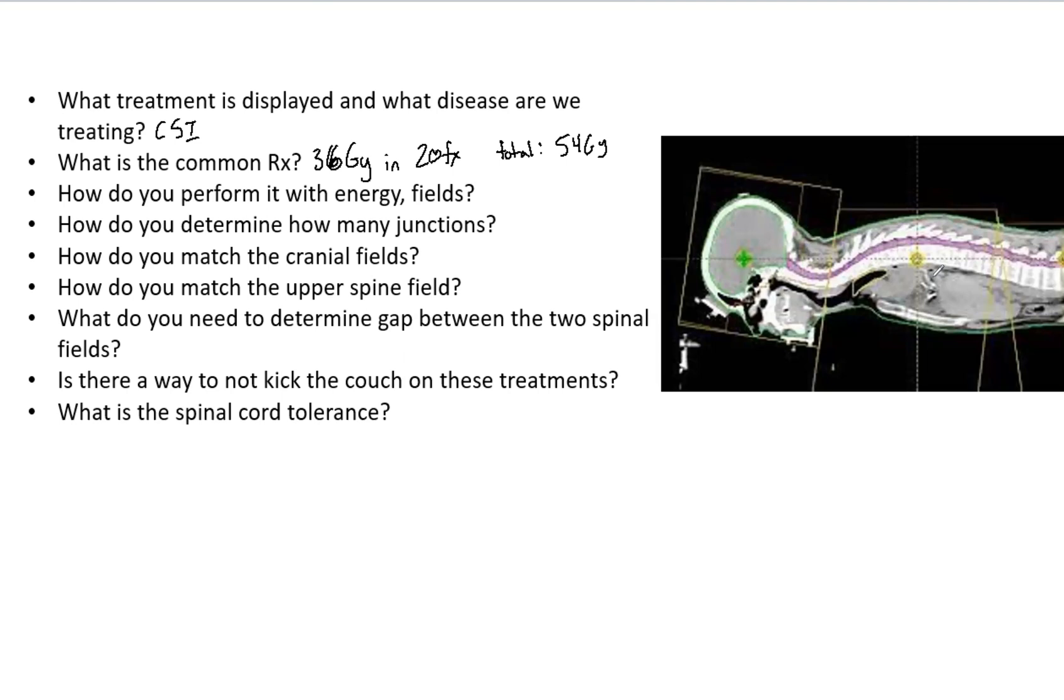You can use tomotherapy or a linear accelerator with a pair of lateral fields to treat the brain. For the C-spine, you can use one or two PA spine fields with various junctions and with the cranial fields and gaps for the spinal fields.